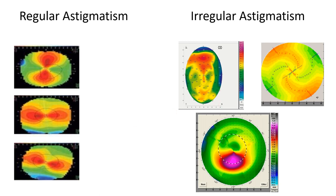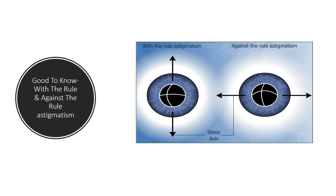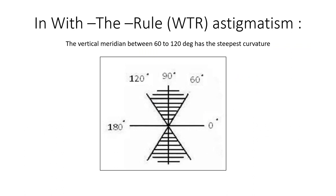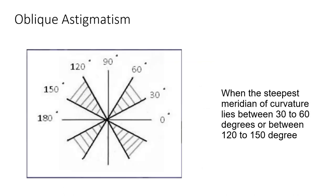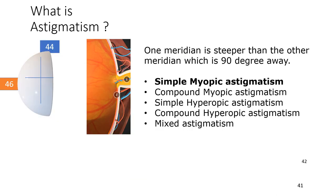With-the-rule astigmatism is vertically oriented and against-the-rule is horizontally oriented. In with-the-rule astigmatism the steep meridian is between 60 to 120 degrees (90 degrees ±30). In against-the-rule astigmatism the steep meridian is at 180 degrees ±30 degrees. In oblique astigmatism the steep meridian is aligned between 120–150 degrees or 30–60 degrees.